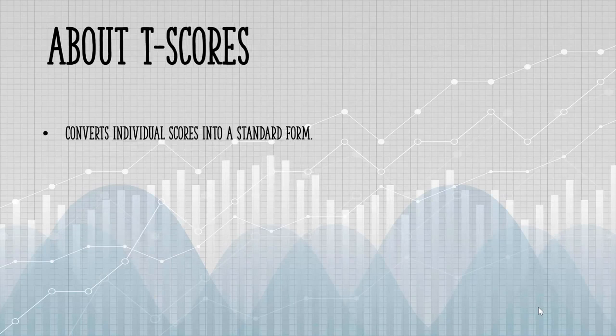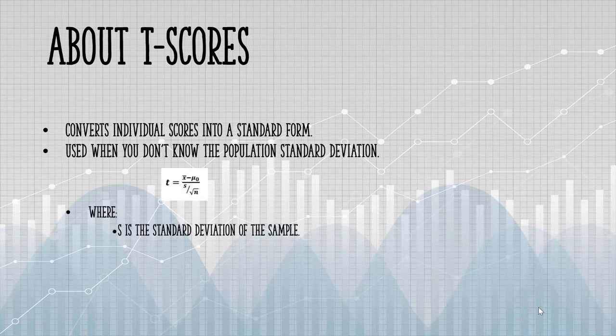Like Z-scores, T-scores are also a conversion of individual scores into a standard form. However, you're going to use this formula when you don't know the population standard deviation. Instead of sigma, you make an estimate of the standard deviation by using your sample. That's the S in the formula. The S is the standard deviation of the sample.